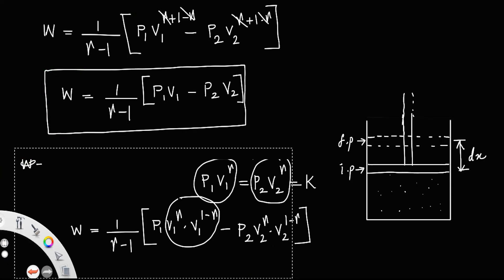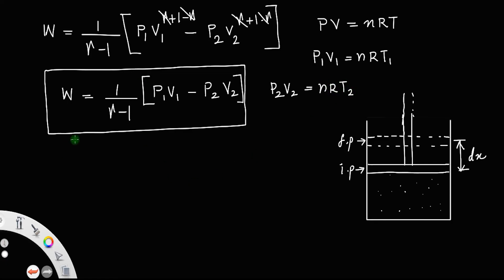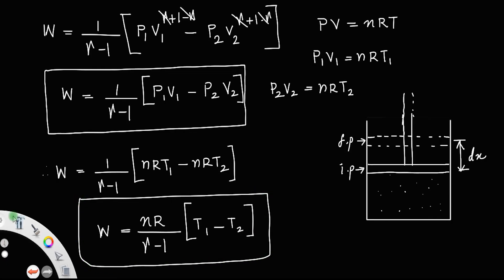Also, you can write this equation using the ideal gas equation PV equal to nRT. Since n and R remain constant, we have P1 V1 equal to nRT1 and P2 V2 equal to nRT2. Substituting, W equals 1 by gamma minus 1 into nRT1 minus nRT2, which gives W equal to nR by gamma minus 1 into T1 minus T2. This is also an expression for the work done in an adiabatic process.